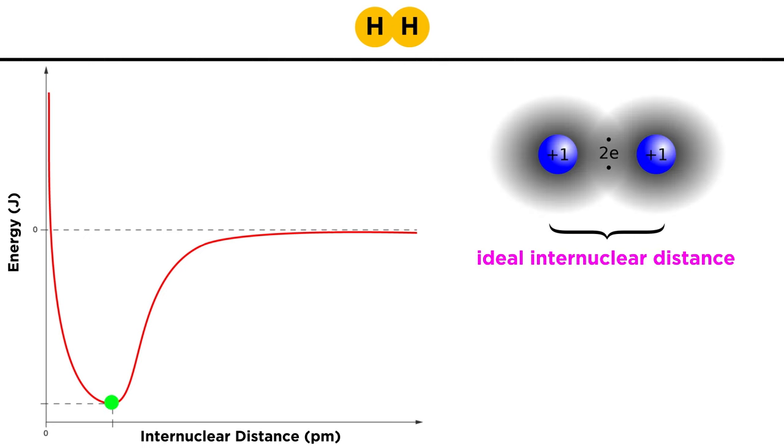So, as we said, it is this phenomenon that reveals the internuclear distance that offers the lowest potential energy, and therefore the ideal covalent bond length, for the hydrogen atoms, which for this case will happen to be 74 picometers, where a picometer is a trillionth of a meter.